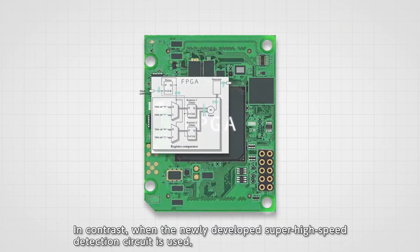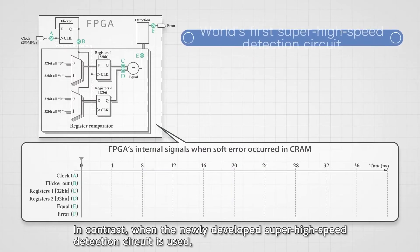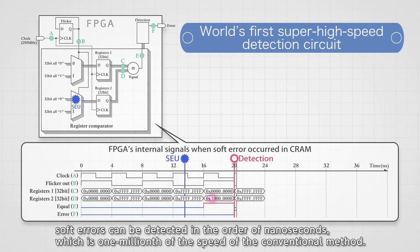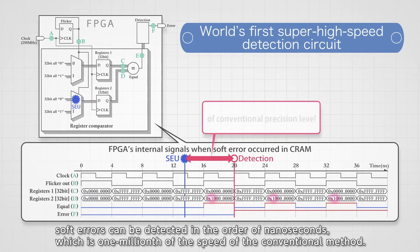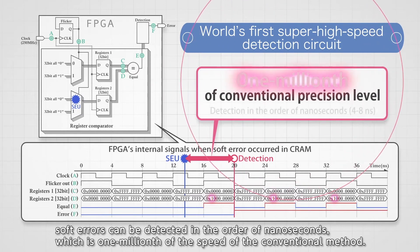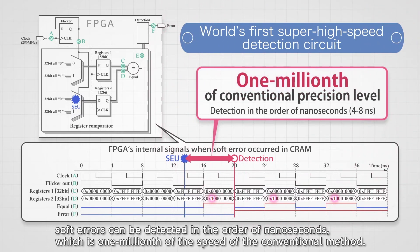In contrast, when the newly developed super high-speed detection circuit is used, soft errors can be detected in the order of nanoseconds, which is one millionth of the speed of the conventional method.